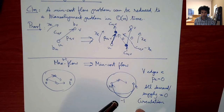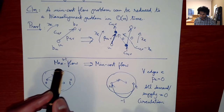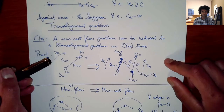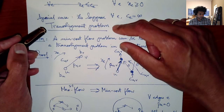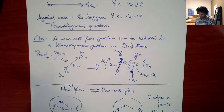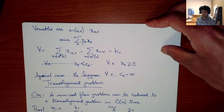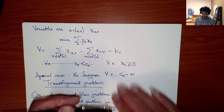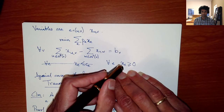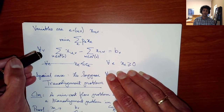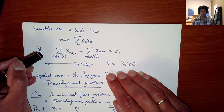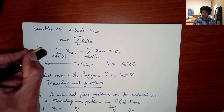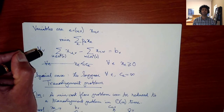Negative costs reduce max flow to min cost flow, and min cost flow reduces to transshipment. Our aim is to get algorithms for the transshipment problem. The nice thing about transshipment is there is no capacity constraint — only non-negativity and flow conservation at all vertices.